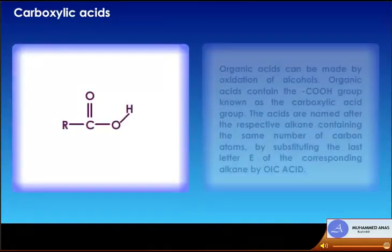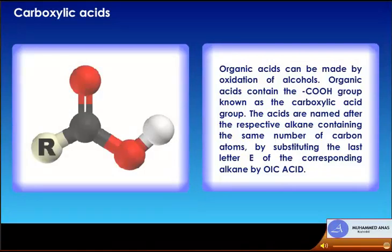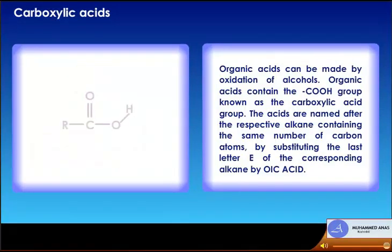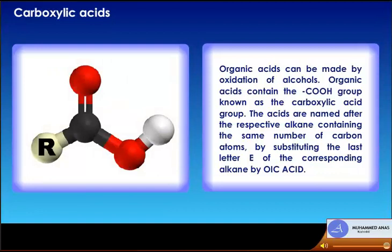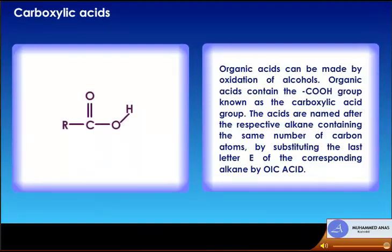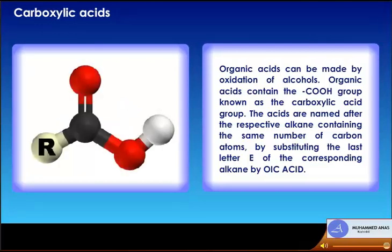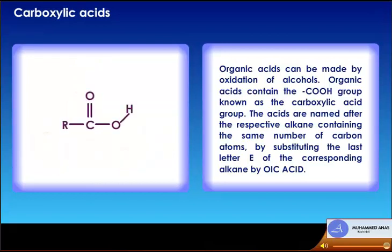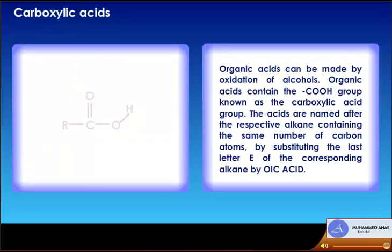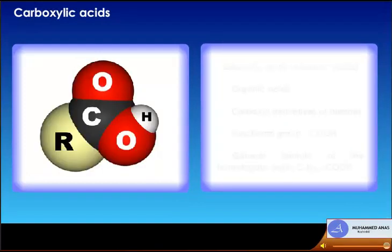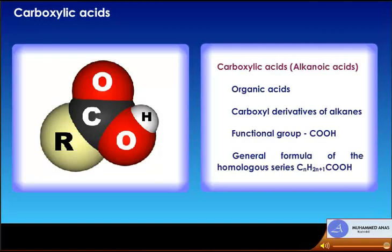Carboxylic acids: organic acids can be made by oxidation of alcohols. Organic acids contain the COOH group known as the carboxylic acid group. The acids are named after the respective alkane containing the same number of carbon atoms by substituting the last '-e' of the alkane with '-oic acid'. Carboxylic acids are alkanoic acids, which are carboxyl derivatives of alkanes with functional group -COOH and general formula CnH2n+1COOH.